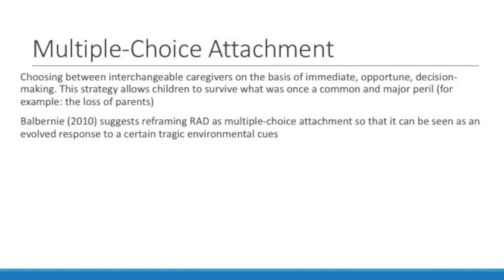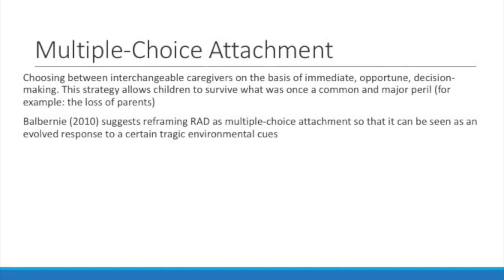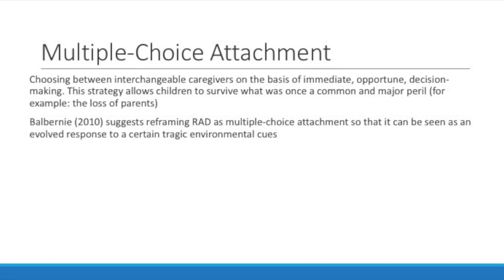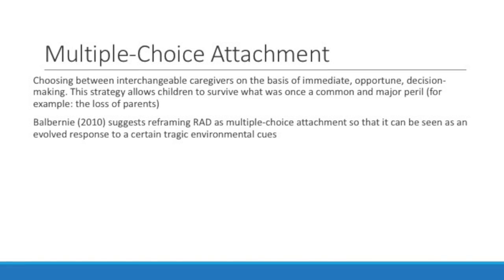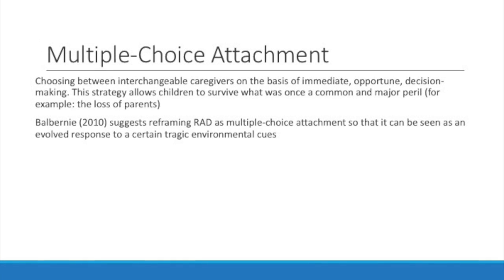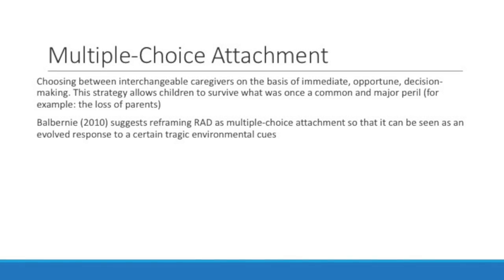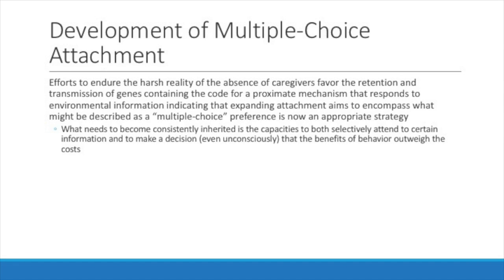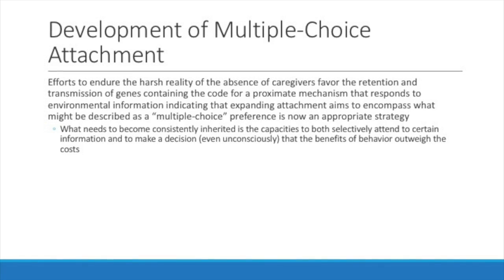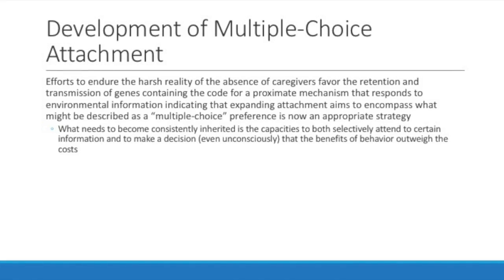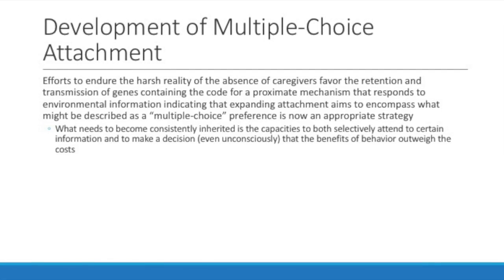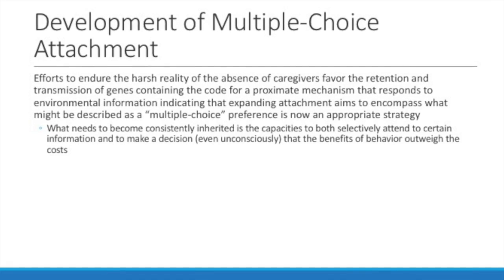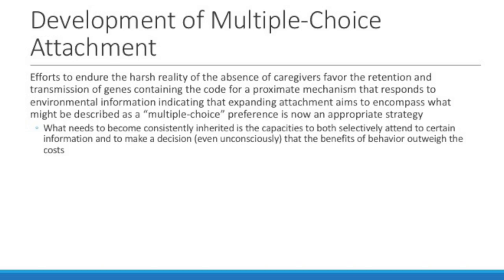A child may develop the behaviors associated with RAD as a survival mechanism following being orphaned, abandoned, or irresponsibly reared. Multiple-choice attachment involves choosing between interchangeable caregivers on the basis of immediate, opportune decision-making. This strategy allows children to survive what was once a common and major peril — for example, the loss of parents. Efforts to endure the harsh reality of the absence of caregivers favor the retention and transmission of genes containing the code for a mechanism that responds to environmental information.